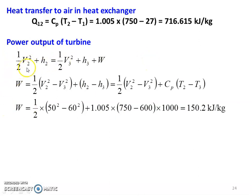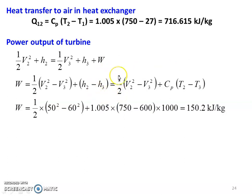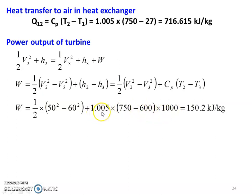Writing the Steady Flow Energy Equation for the turbine: (1/2)V2² + H2 = (1/2)V3² + H3 + W. Rearranging: W = (1/2)(V2² − V3²) + (H2 − H3), where H2 − H3 = CP × (T2 − T3). Substituting values: W = (1/2)(50² − 60²) + 1.005 × (750 − 600) × 1000 = 150.2 kJ per kilogram. The power output of the turbine is 150.2 kJ per kilogram.